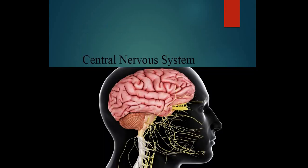Last lecture میں ہم لوگ نے start کیا تھا new chapter Nervous System جس کو ہم نے اردو میں عصبی نظام بھی کہا تھا۔ ہم لوگوں نے دیکھا تھا basically Nervous System کیا ہوتا ہے — ہماری body کا وہ نظام جو ہماری body کی تمام activities کو control کرتا ہے، اس نظام کو ہم نے عصبی نظام کا نام دیا تھا۔ اس کی different classification ہم لوگ نے دیکھی تھی۔